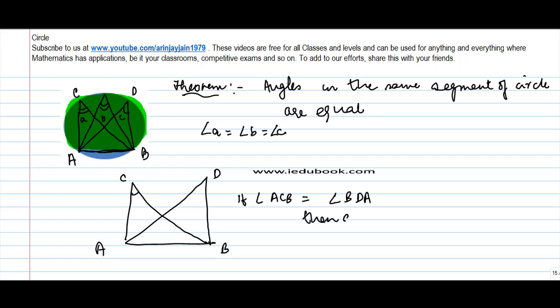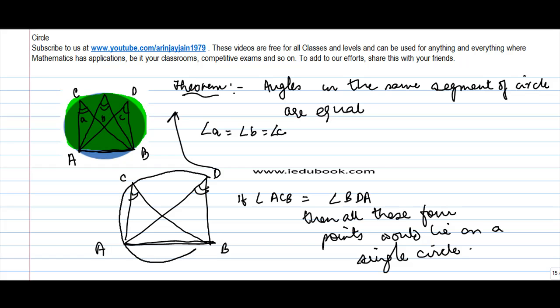This is an extension of this theorem, which means that if these two angles are equal, this is basically a chord and these angles are concyclic, formed in a circle. You can form a circle and all these four points will lie on the circumference.